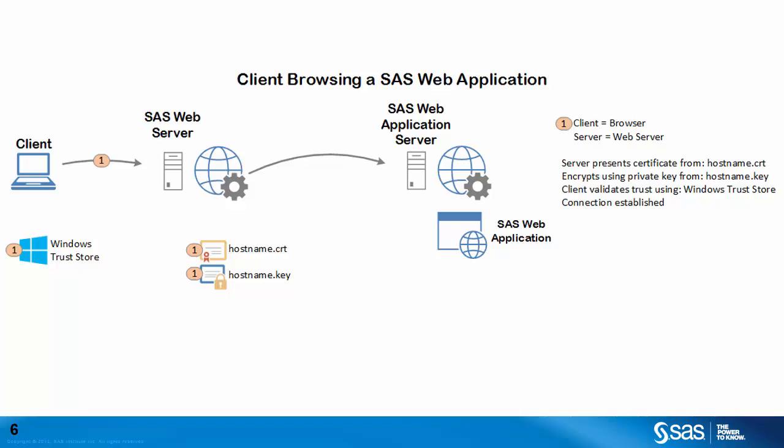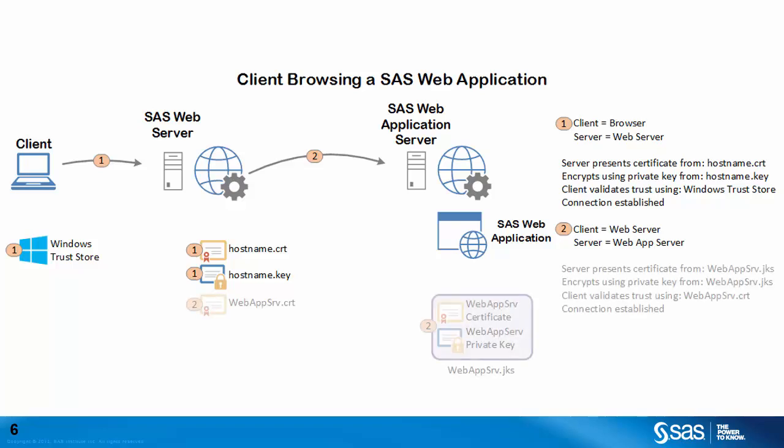If the trust can be established and the other parts of the handshake occur correctly, the connection is established. For the second connection, where the SAS web server proxies the request to a SAS web application server instance, the SAS web server is the client for the TLS handshake, and the SAS web application server is the server. The SAS web application server presents the SAS web server with its certificate from the webappserver.jks key store and encrypts with the private key also in the key store. The SAS web server validates the trust using webappserver.crt — remembering this is a self-signed certificate. If the trust can be established and the other parts of the handshake occur correctly, the connection is established.